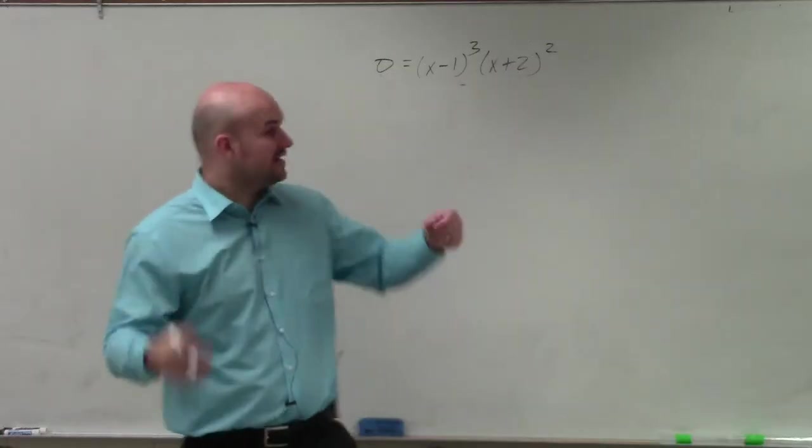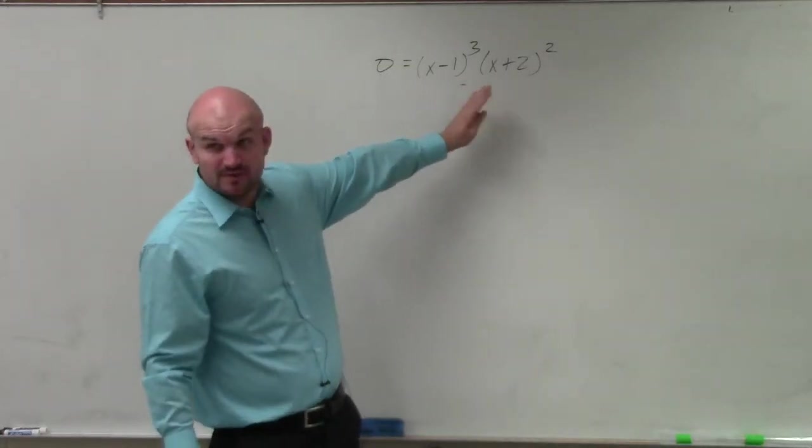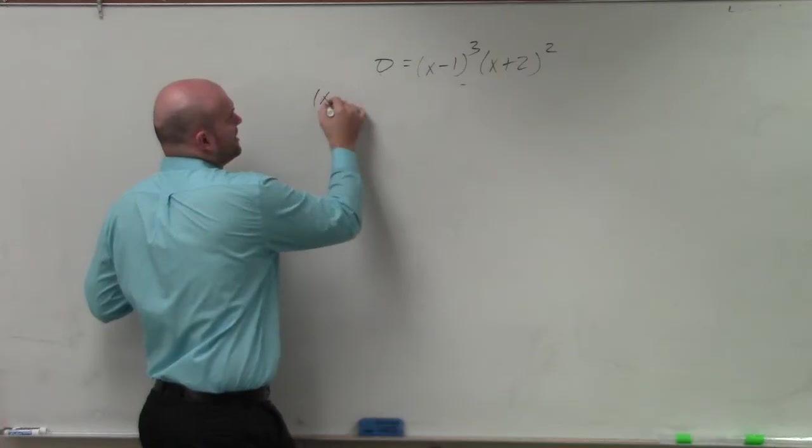Now you see I have the product in factored form set equal to 0. Now I can apply my zero product property.